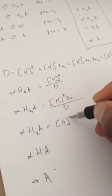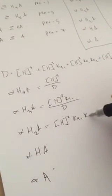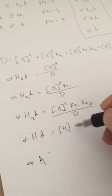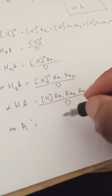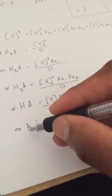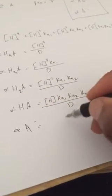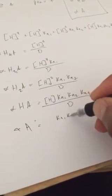Here it's H squared Ka1 Ka2 all over D. Here it's just one proton, so it's just H Ka1 Ka2 Ka3 over D. And here all the protons have been lost, so you essentially account for that by doing Ka1 Ka2 Ka3 and Ka4 over D.